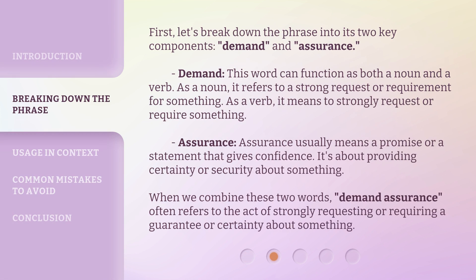First, let's break down the phrase into its two key components, Demand and Assurance. Demand — this word can function as both a noun and a verb. As a noun, it refers to a strong request or requirement for something. As a verb, it means to strongly request or require something.